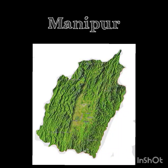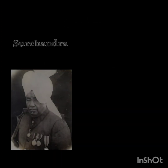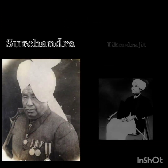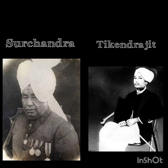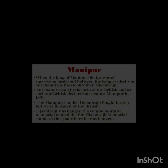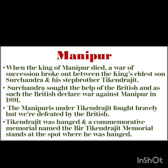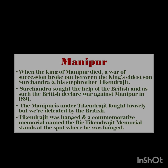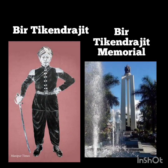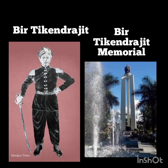In Manipur, when the king died there was a war of succession between two factions. The main contenders were the king's eldest son Surachandra and his stepbrother Tikendrajit. Surachandra sought the aid of the British, and they declared war against Manipur in 1891. The Manipuris under Tikendrajit fought bravely but were defeated, and Tikendrajit was hanged by the British. A commemorative monument named the Bir Tikendrajit Memorial stands at the spot where he was hanged.